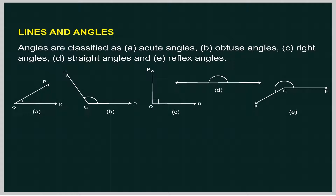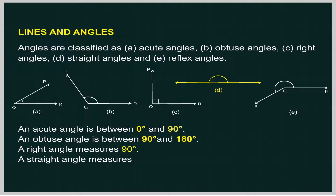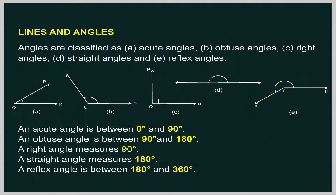An acute angle is between 0 degrees and 90 degrees. An obtuse angle is between 90 degrees and 180 degrees. A right angle measures 90 degrees. A straight angle measures 180 degrees. A reflex angle is between 180 degrees and 360 degrees.